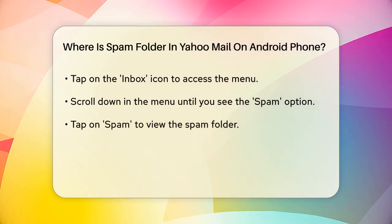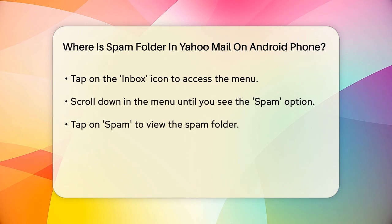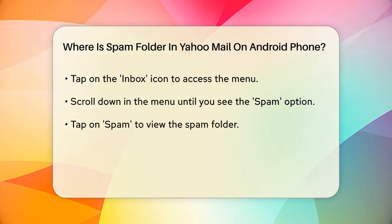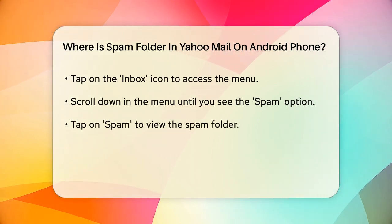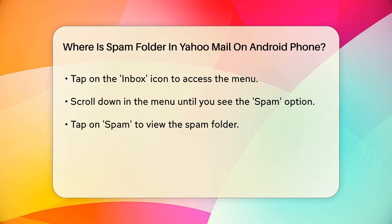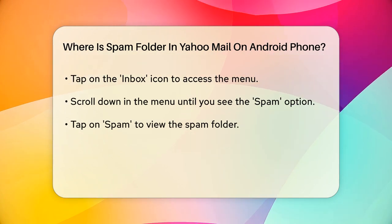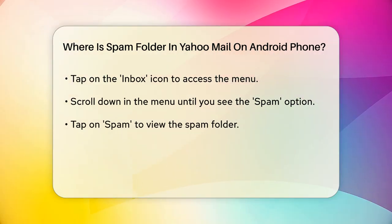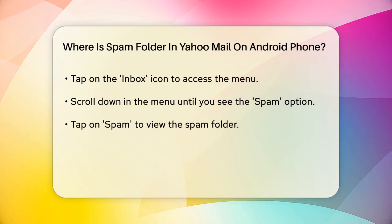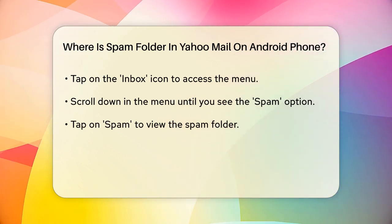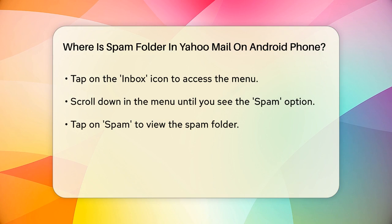Now, to check the spam folder, you need to navigate to a different section of the app. Look at the bottom left corner of the screen, where you'll see the inbox icon. Tap on this icon and you'll see a menu pop up. In this menu, scroll down until you see the spam option. It's usually located towards the bottom.